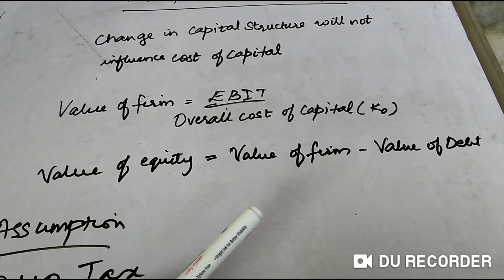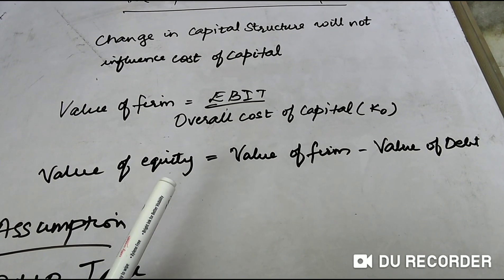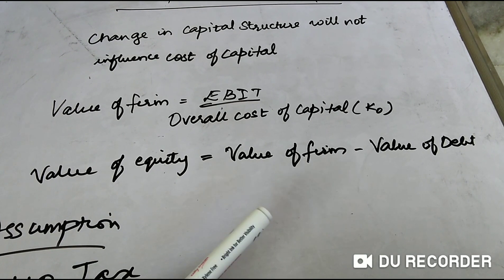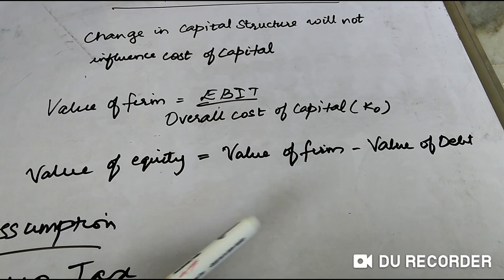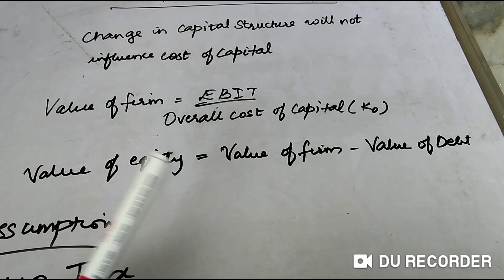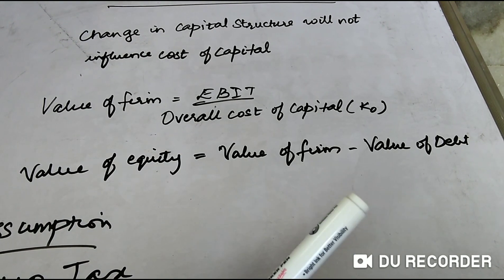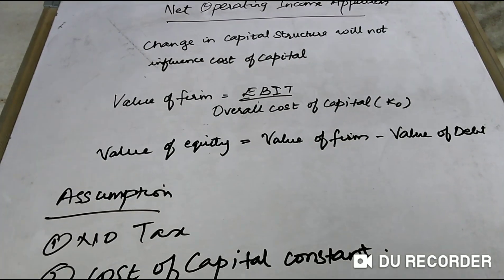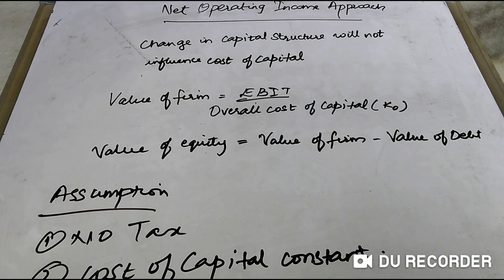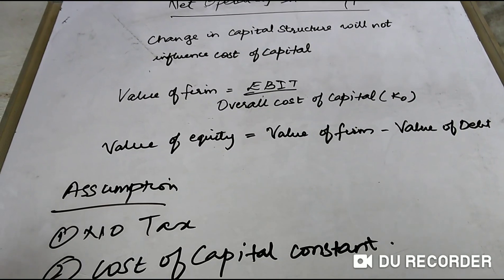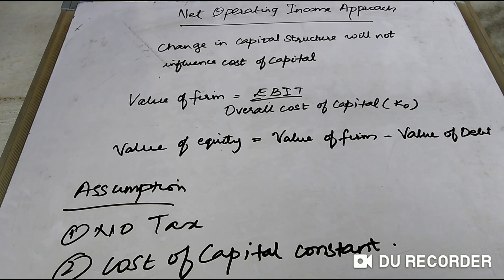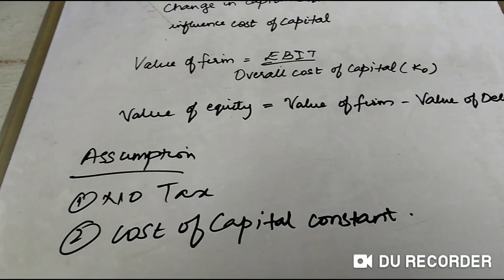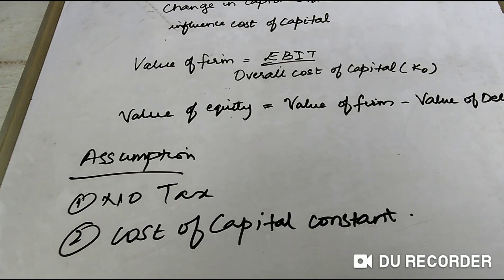Yesterday's problem used: Value of firm = Value of equity + Value of debt. It is the same equation — they have just transferred a value from one side to the other. Now, the assumptions for the Net Operating Income approach are: no tax will be calculated, and preference dividend is not considered — just like yesterday.